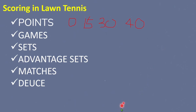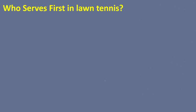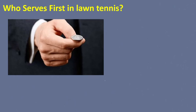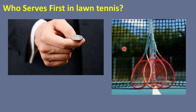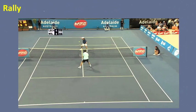The question is: who serves first in lawn tennis? There are two things done to determine who will serve first. First, a toss of coin determines which player or team serves first by flipping a coin or spinning the racket. If the call is correct, the player or team who made it gets to serve first. The player or team who made the incorrect call selects which side of the court to play on initially.